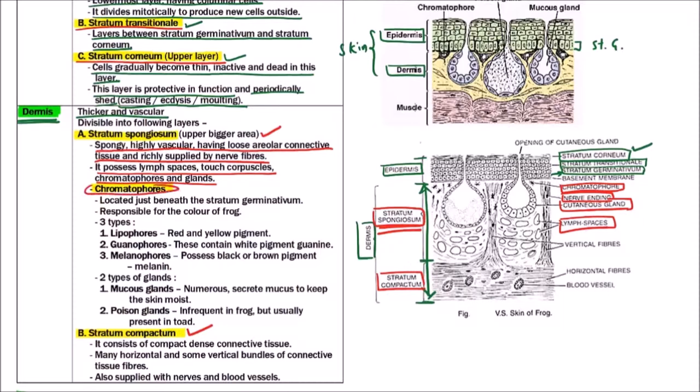Now what are chromatophores? Chromatophores are located just beneath the stratum germinativum and are responsible for the color of frog. These are of three types: lipophores, which are red and yellow pigmented; guanophores, which contain white pigment guanine; and melanophores, which possess black or brown pigment melanin.